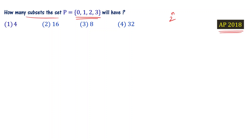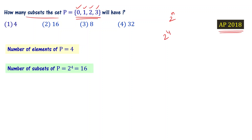The number of elements in set P: 0, 1, 2, 3 — that is 4 elements. So, number of subsets = 2 power 4 = 16. Therefore, the number of subsets of P is equal to 16.